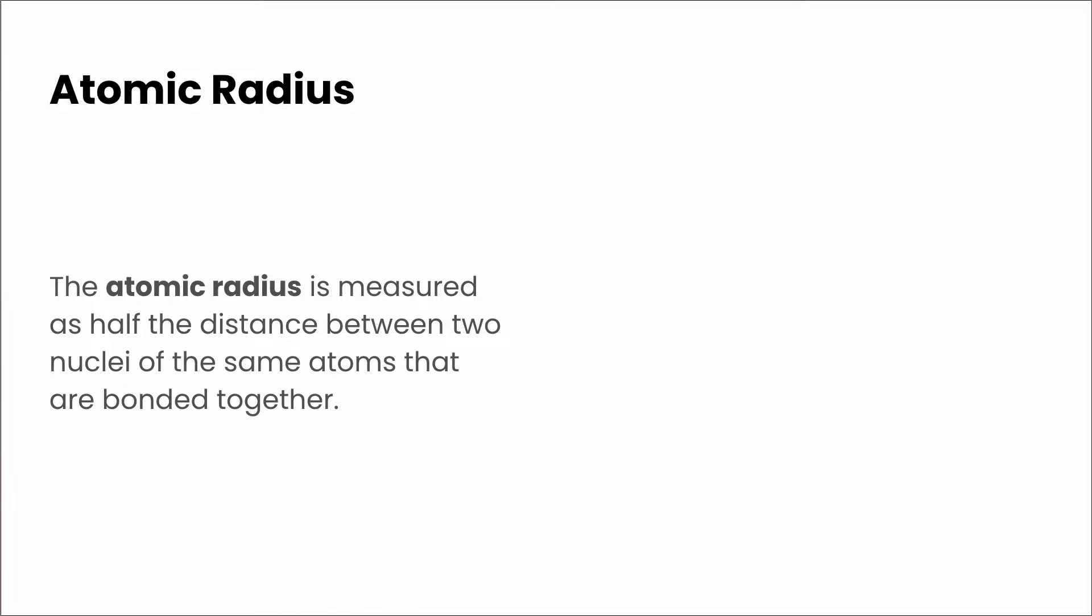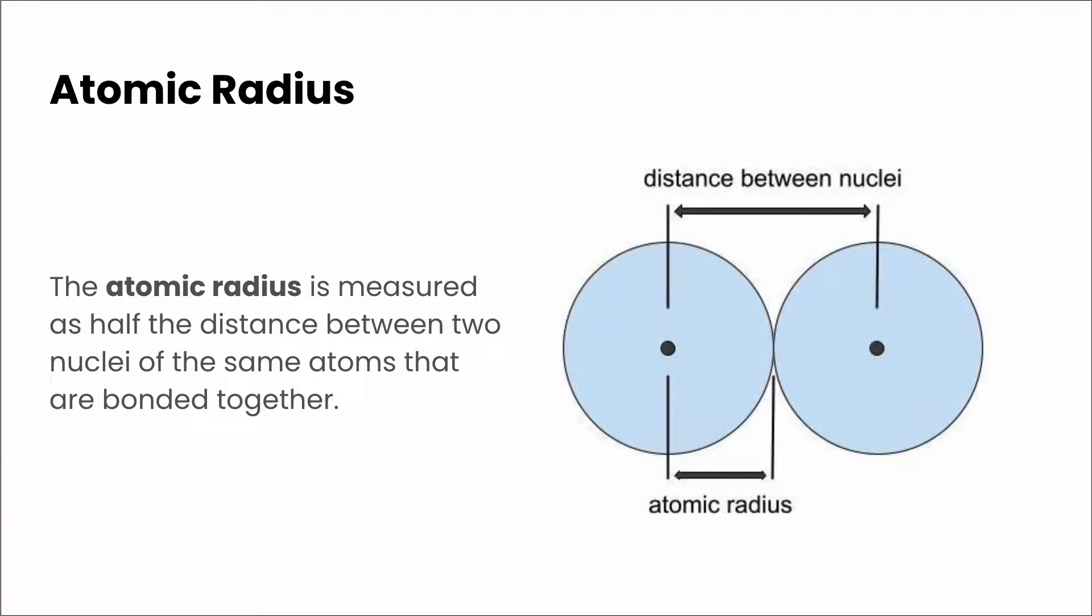The atomic radius is formally defined as half of the distance between two nuclei of the same atoms that are bonded together. So what this looks like in a picture is if we had two chlorine atoms that are bonded together, we would take the distance between the two nuclei and then take half of that and that would be the atomic radius.